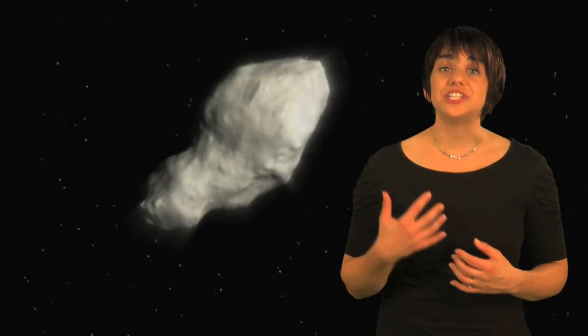Comets and asteroids are material left over from the formation of the solar system. What are they made from and could they hide clues about the origin of the solar system?